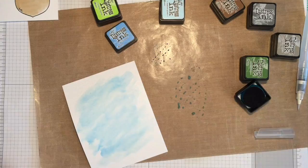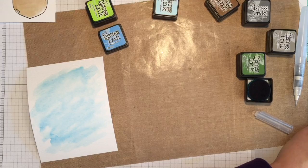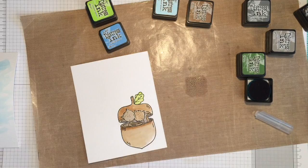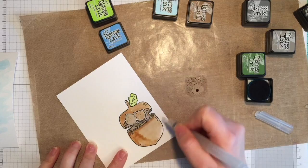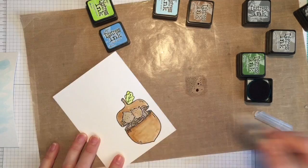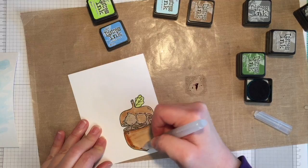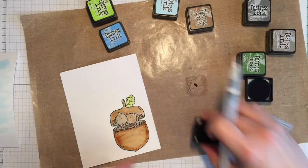And now I'm just going to add another layer of color on top of what I've already done just to deepen the shadows and to make it a little bit more dimensional. So I'm using the vintage photo to add another layer of color to the bottom part of the acorn and concentrating it around the sides to round the shape a little bit more. And then I'm going to use the ground espresso to darken the top part of the acorn or the acorn cap.